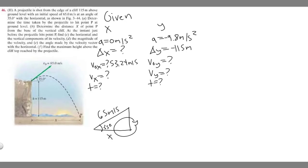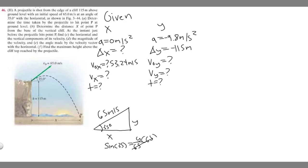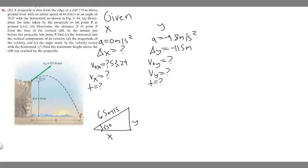For the Y direction, we use sine: sine of 35 equals opposite over hypotenuse, so Y equals 65 times sine of 35, which gives 37.28 meters per second. That's our initial velocity in the Y direction. Now we have everything needed to move on to part A.